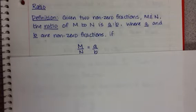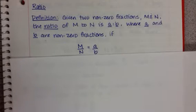Okay, we're going to start off our discussion on ratio and proportion by defining what a ratio is. In this case, we have the definition: given two non-zero fractions, we're going to call those capital M and capital N. The ratio of M to N is A to B, where A and B are non-zero fractions if M is being compared to N, then A is being compared to B.